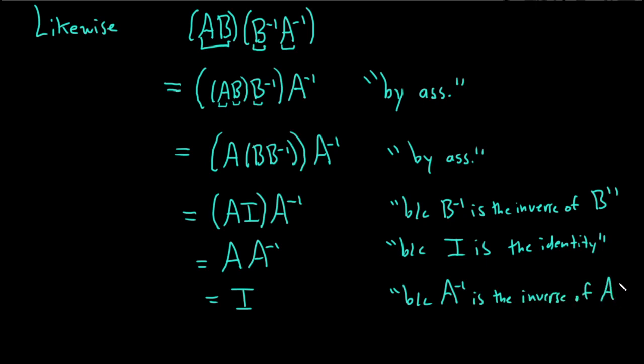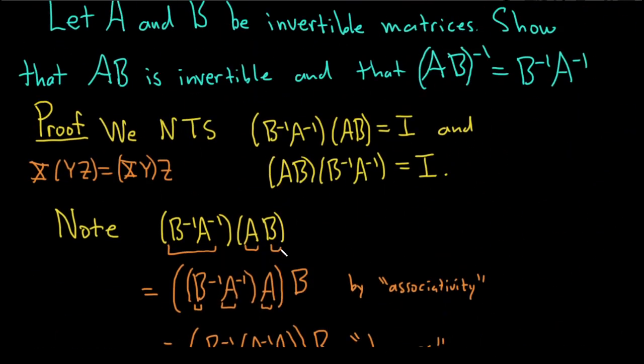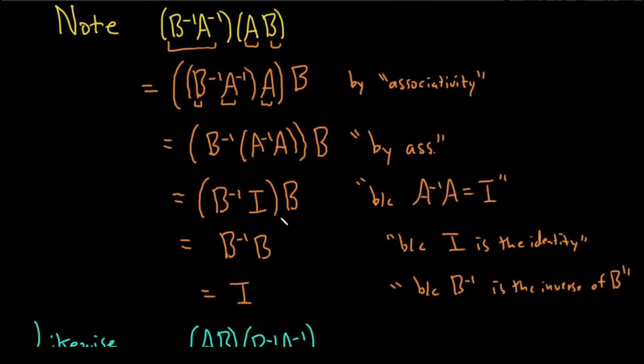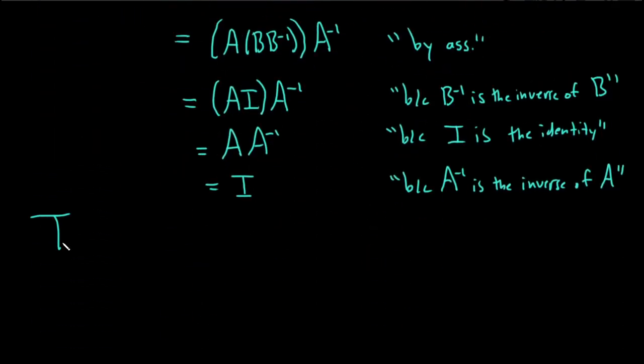So just trying to justify every single step in the proof. I think that's a good way to really make sure that you know what's going on. I probably should have mentioned just right at the outset that these exist. So because A is invertible and B is invertible, we can write down B inverse and A inverse. But not a huge deal because I said it now.